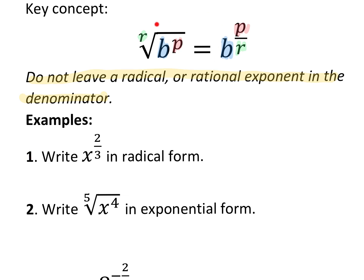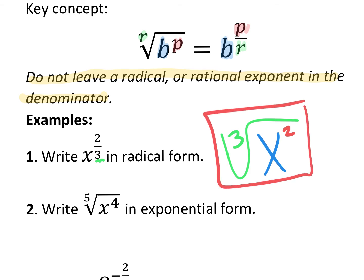Number one: knowing these notes, you should be able to rewrite this rational exponent in radical form. What root do we have? The denominator is the root — that's the third root. The numerator is the power, and the base stays the base. So we have the third root of x to the second power. Super easy — that's like a free point on the quiz and on the test.